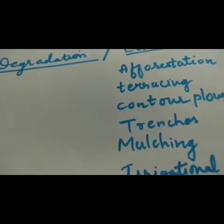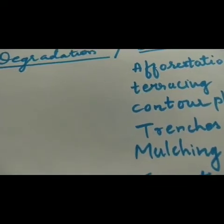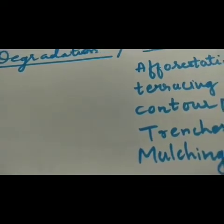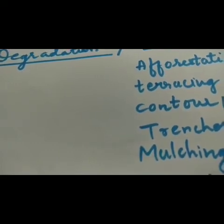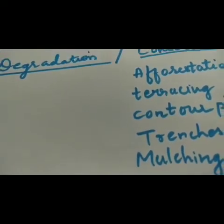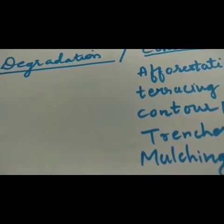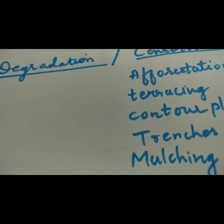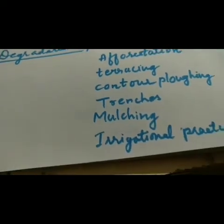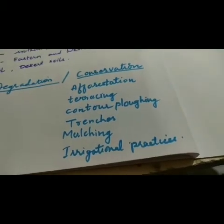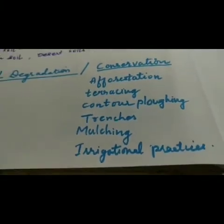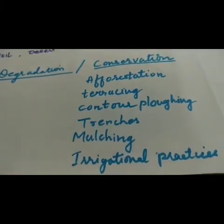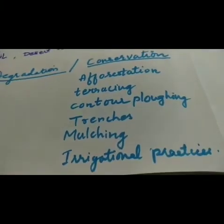Mulching: farmers can reduce soil erosion from their fields by covering ploughed soil or soil left bare after a harvest — this is known as mulching. Dried vegetation, straw, and discarded parts of the harvested crop can be used to mulch the soil. Irrigation practices such as sprinkler irrigation and drip irrigation should be used to check soil erosion caused by heavy flow of water. These are the techniques of soil conservation.